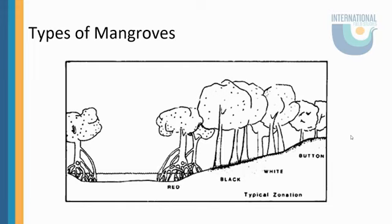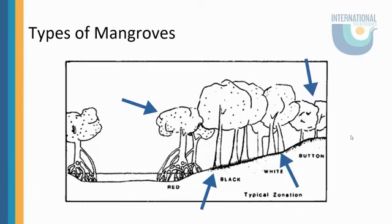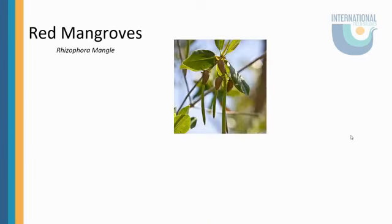So the types of mangroves we're going to talk about today — there are four different ones. Mangroves are determined by tidal changes, elevation, salinity, and oxygen levels of the soil. For today, we are going to talk about red mangroves, black mangroves, white mangroves, and also buttonwood. So to start, we will start with our red mangroves.